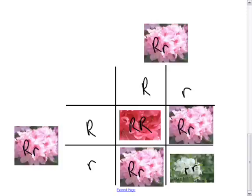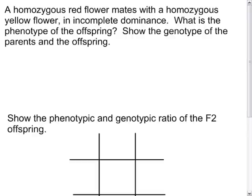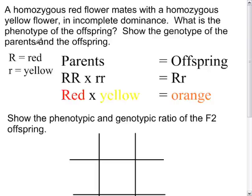Let's do another practical example. A homozygous red flower mates with a homozygous yellow flower in incomplete dominance. What is the phenotype of the offspring? Show the genotype of the parents and the offspring, the phenotypic and genotypic ratio of the F2 offspring for that cross. Pause the video, then unpause when you're ready for the answer.